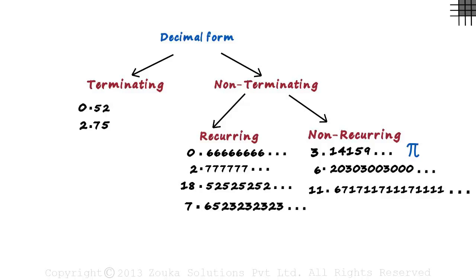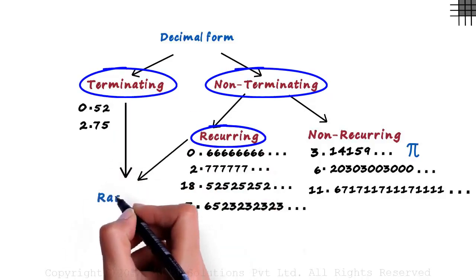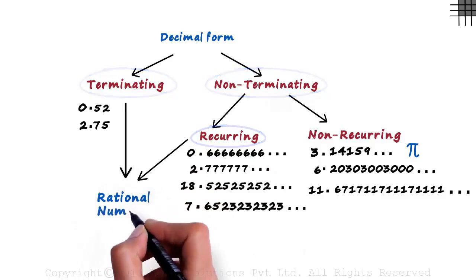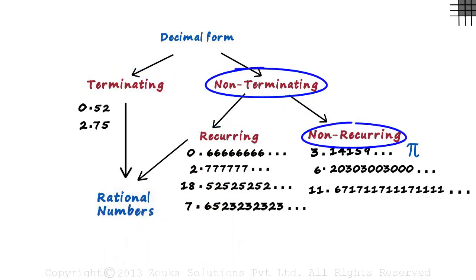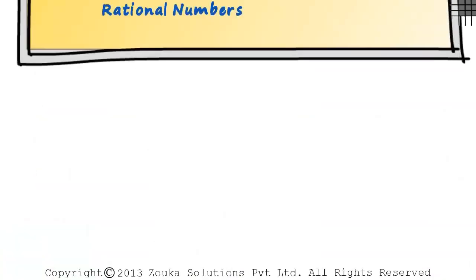But here's the main point of the video. Terminating decimals and non-terminating recurring decimals together form rational numbers. Non-terminating non-recurring decimals cannot be expressed as P by Q, which is why they are not rational numbers.